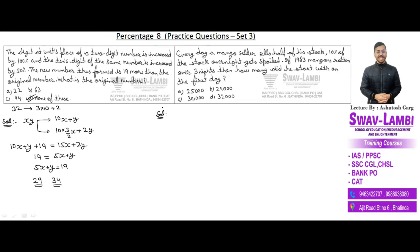Next question: a vendor sells half his stock, and 10% of the remaining stock gets spoiled overnight. We need to find how many mangoes he started with if 1983 mangoes rotted over 3 nights. Each day: he sells half his stock, then 1/10 of the remaining gets spoiled, leaving 9/20 of that day's starting stock. Day 1: starts with N, remaining after spoilage = 9N/20. Day 2: remaining = 9/40 of N. Day 3: spoiled = 9/400 of N.